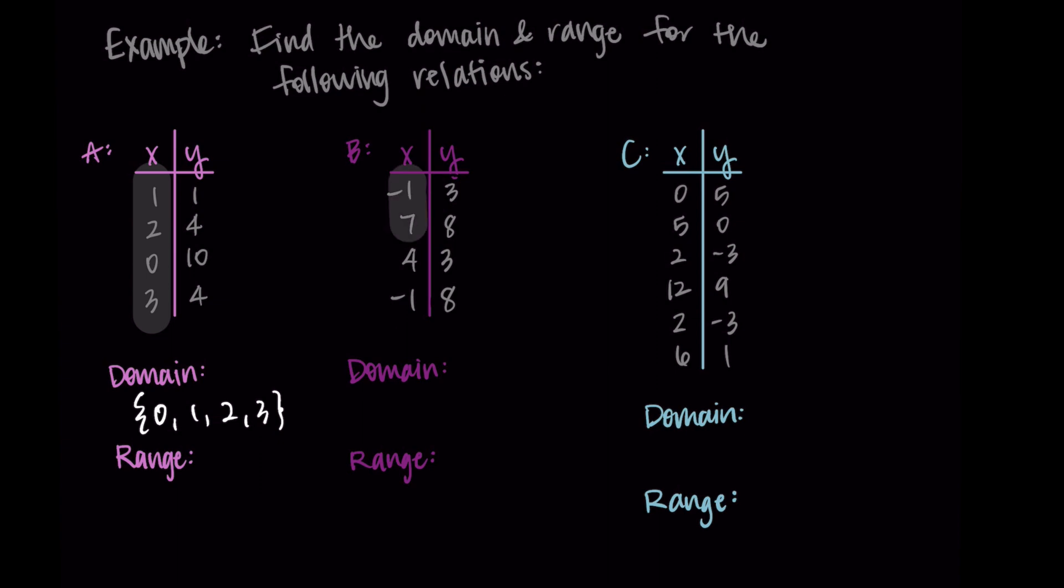Now for relation B, if I'm looking at my possible inputs, I'm going to write these down for my domain. And I'm just going to immediately write them in order from least to greatest. So I'm seeing I have -1, -1, 4, and 7. So this would be my domain. But you'll see here that we have a repeated value. We have that -1 listed twice. So I'm actually just going to take that out and just write each item once. So {-1, 4, 7}. And that would be my domain.